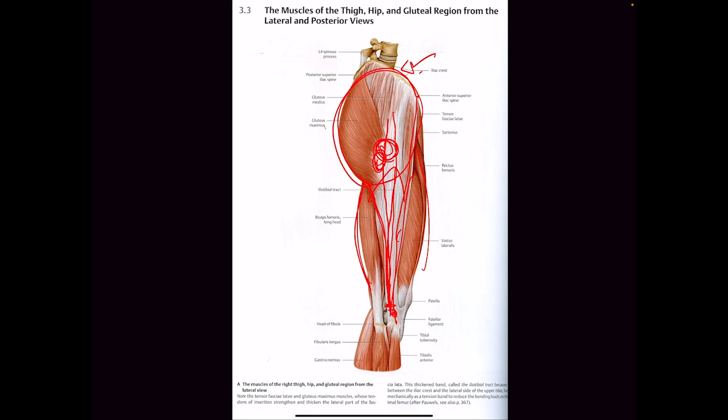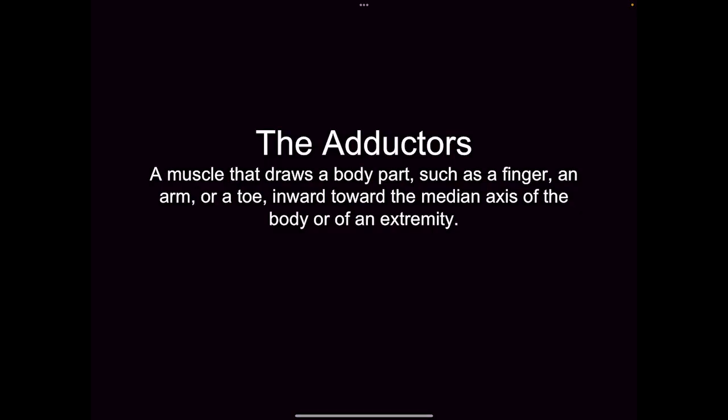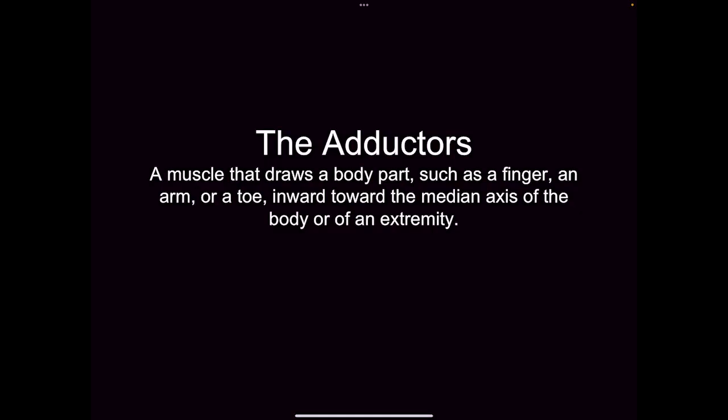It's creating counter tension to the adductor muscles, which we will talk about next. The adductors — not abductors — are muscles that draw a body part, such as a finger, an arm, or a toe, inward towards the median axis of the body or an extremity.